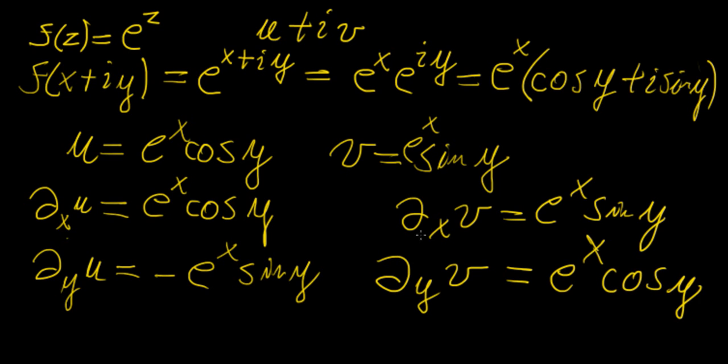So the Cauchy-Riemann equation tells us that if the cross-derivatives, in this case, if this and that are equal, and if this and that are equal, and this has to be negative. So if we make this negative, and that negative form is equal to this, then the function is indeed analytic. So in this case, it is analytic.